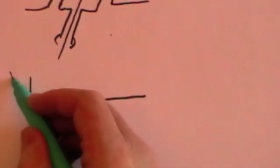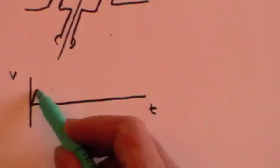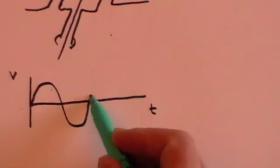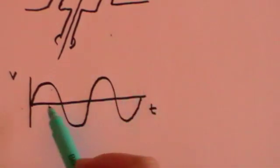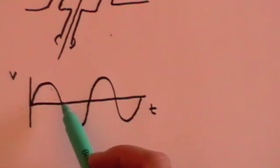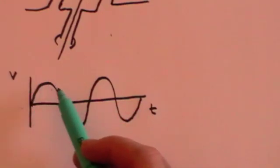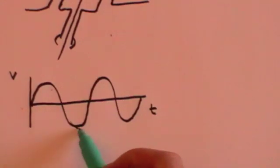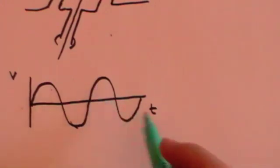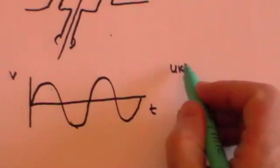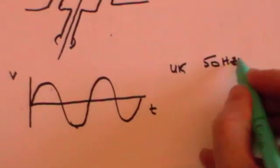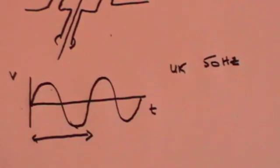If you look on an oscilloscope, which records the voltage against time, what you would find is a sine wave that looks like this. For half the turn, the voltage and current would be in one direction; the other half, in the other direction. It constantly changes — every half turn the voltage and current switch direction. And in the UK, for the national grid, that would be 50 hertz. In other words, there would be 50 complete cycles per second — one cycle being a complete oscillation in both directions.